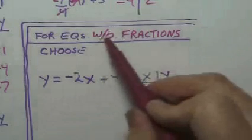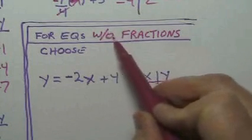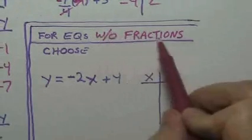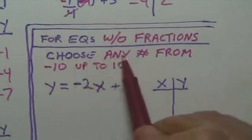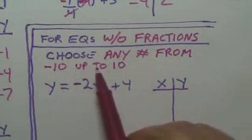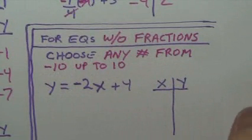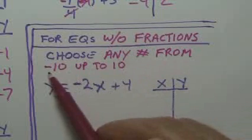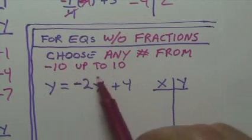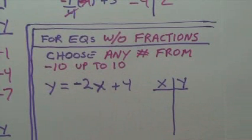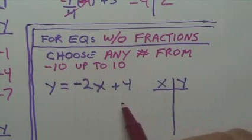By the way, this is a symbol for without. If you put a 0, an O in there, without fractions. You can choose any number from negative 10 up to 10. From negative 10 up to 10. And the reason why is because most of the graphs just go from negative 10 to 10.